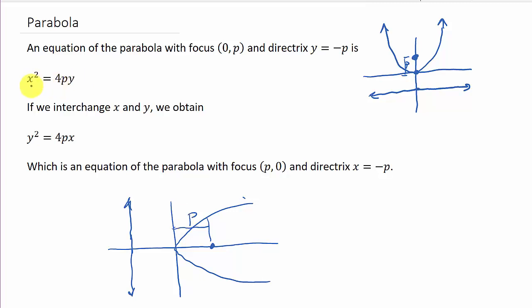And so another way to write these when they're, see here the vertex is at zero, zero. But if we look at it, x minus h squared equals 4p times y minus k, and then here we would have y minus k squared equals 4p times x minus h, and the vertex would be hk.